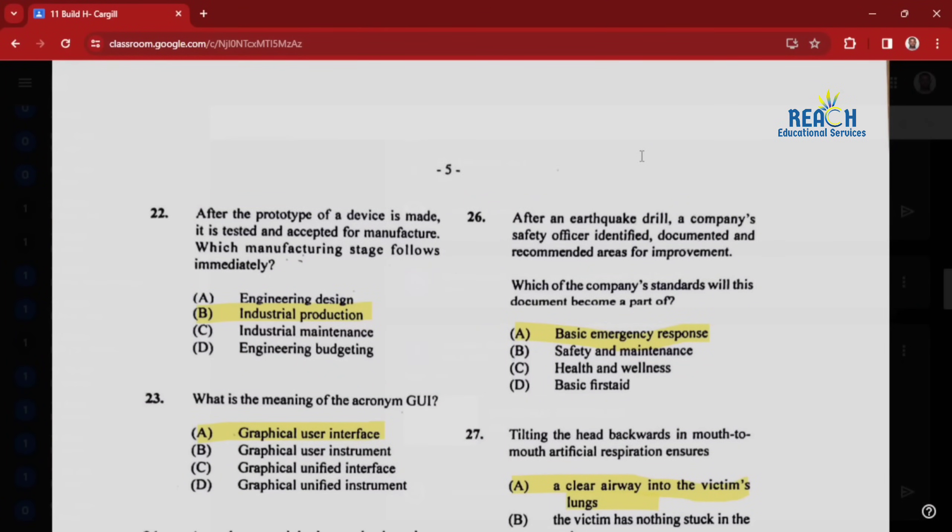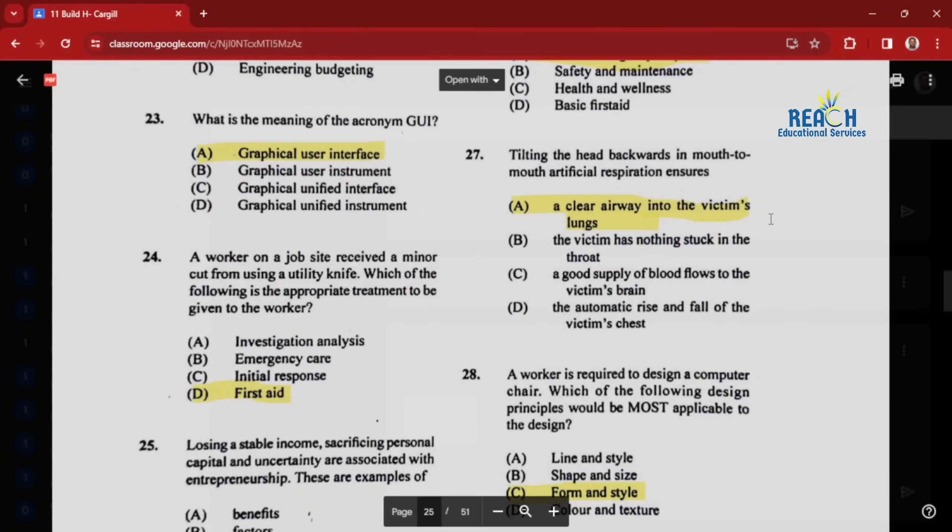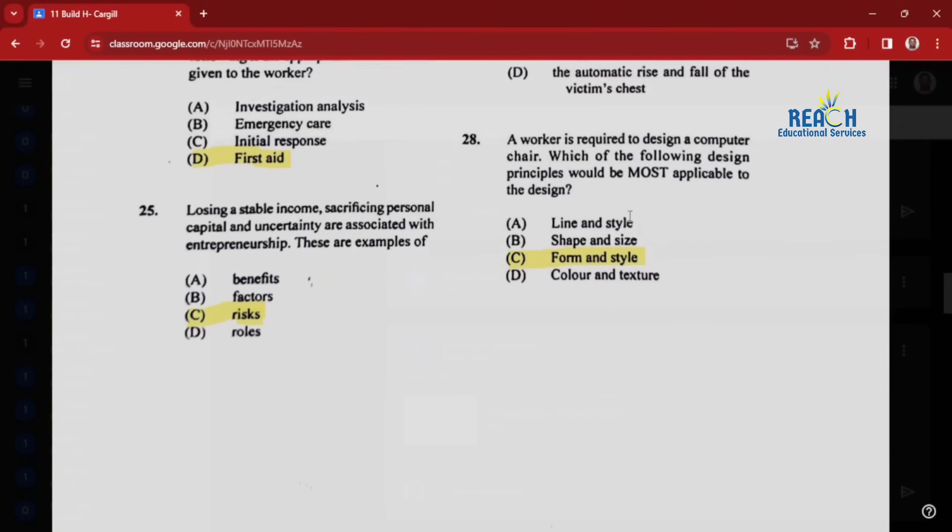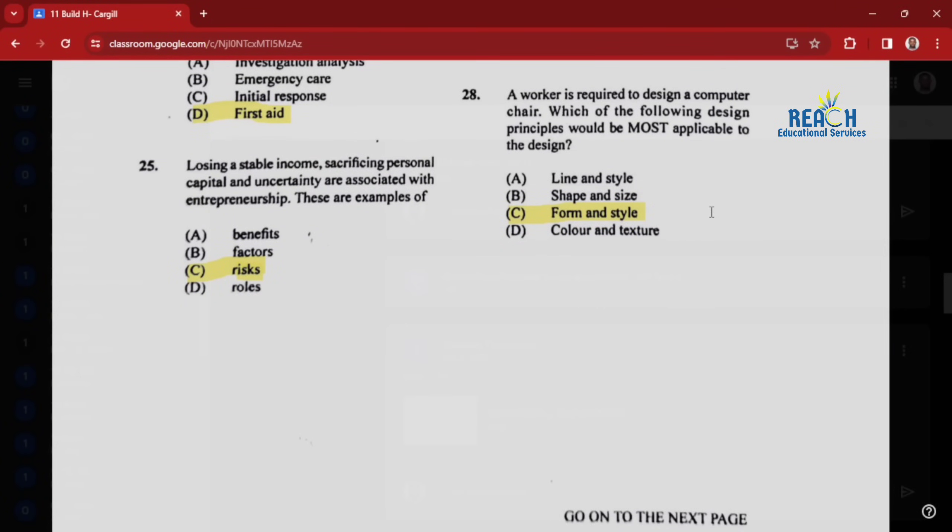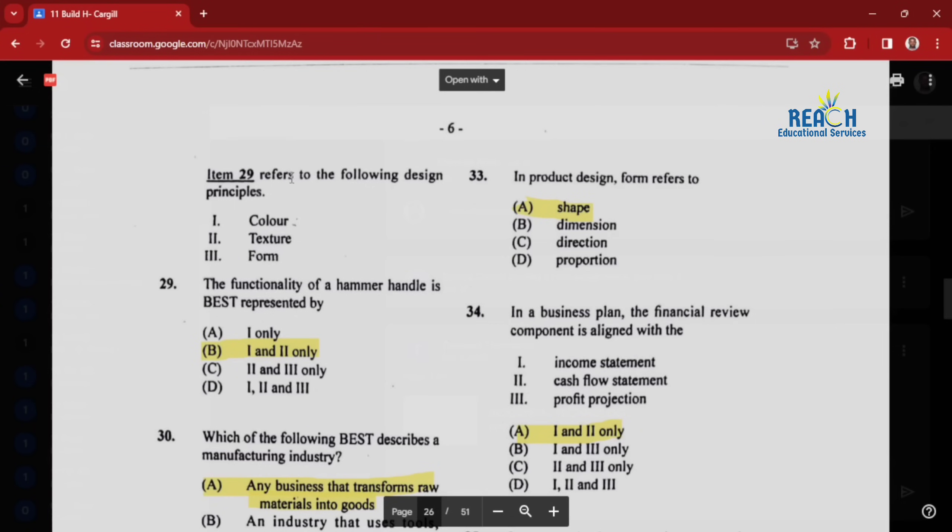Question twenty-six: after an earthquake drill, a company's safety officer identified, documented, and recommended areas for improvement. This is a basic emergency response. Question twenty-seven: tilting the head backwards in mouth-to-mouth artificial respiration ensures clear airway into the victim's lungs. Question twenty-eight: a worker is required to design a computer chair. Which design principles would be most applicable? That would be form and style. Item twenty-nine refers to the following design principles: color, texture, and form. The functionality of a hammer handle is best represented by...